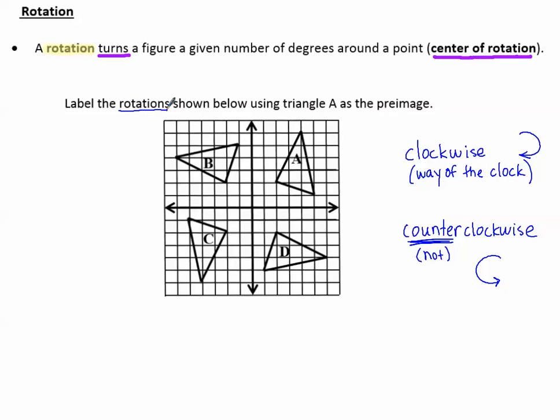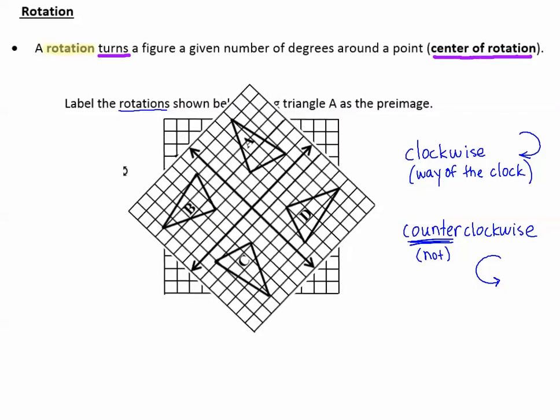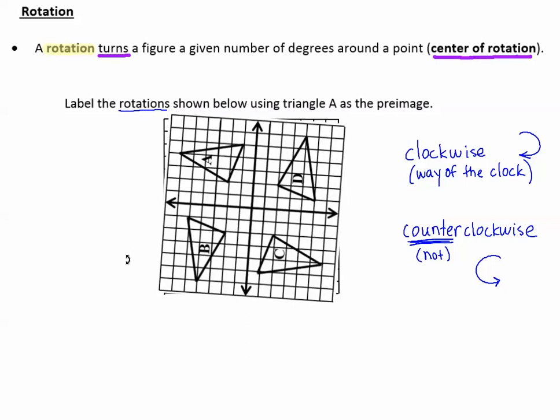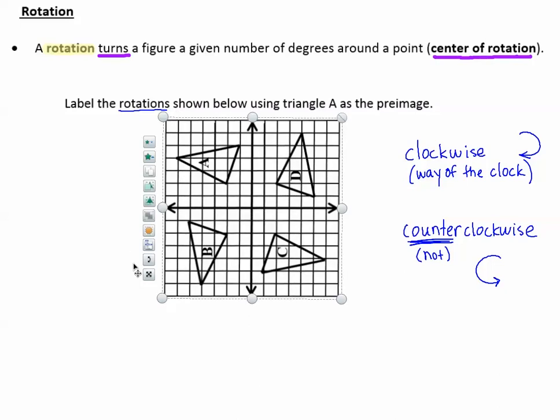Label the rotations shown below using triangle A as the pre-image. So here's triangle A. How is triangle B rotated from triangle A? So if we take this figure and we rotate it counter-clockwise, notice that when I turn it on its side, this looks like where figure B was.